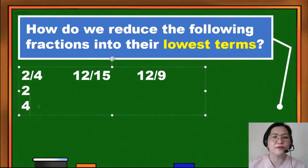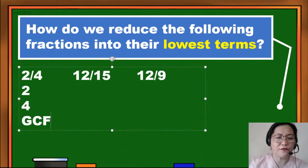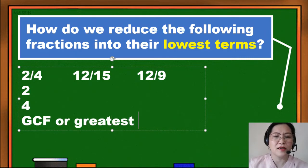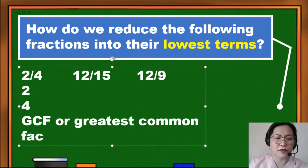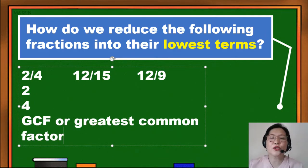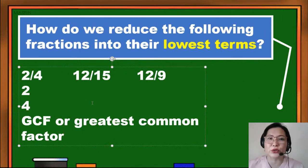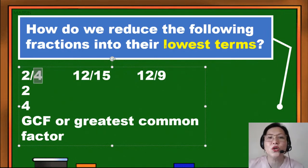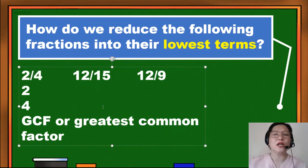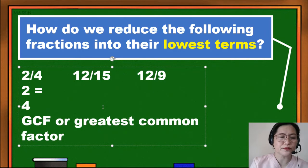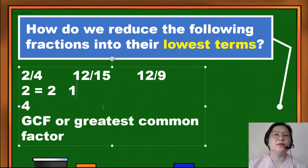What is a GCF? GCF is what we call greatest common factor — greatest, common, factor. Since we are talking of factors, we are going to get the factors of the numerator and the denominator that we want to reduce to lowest terms. What are the factors of 2? The factors of 2 are 2 and 1, because when you multiply 2 and 1, the answer is 2.